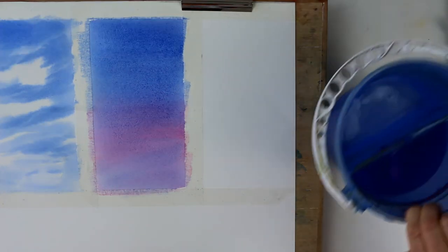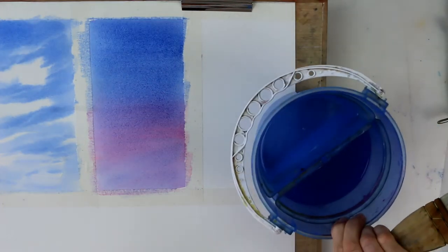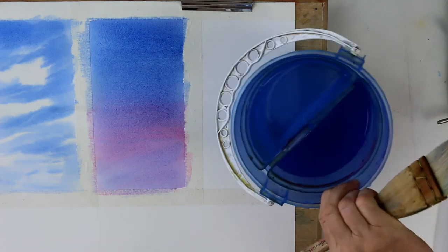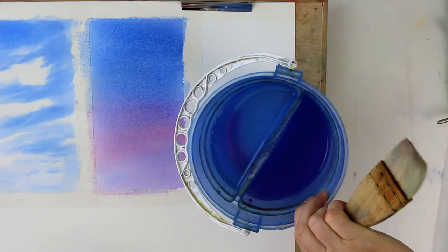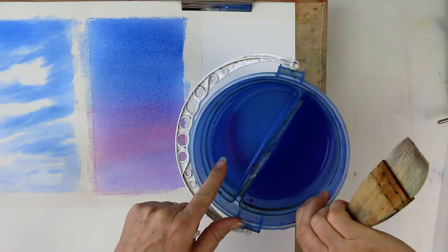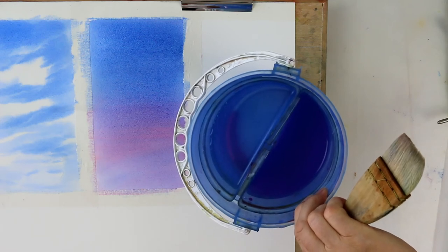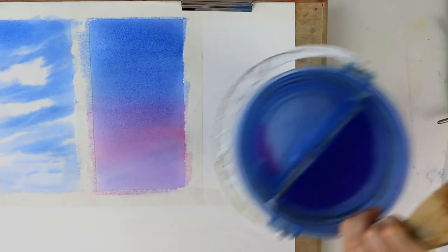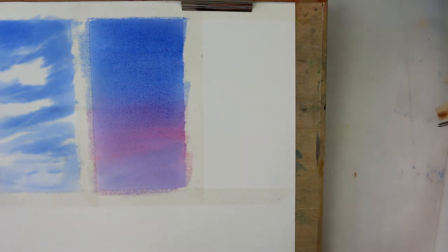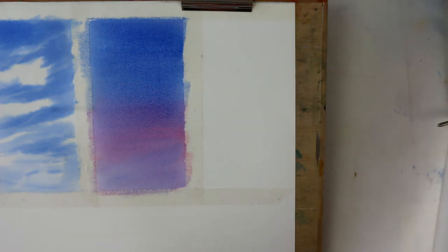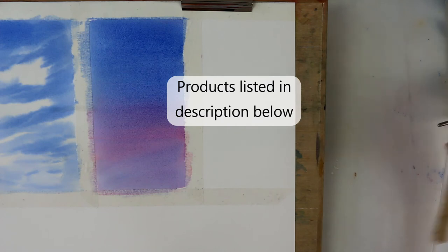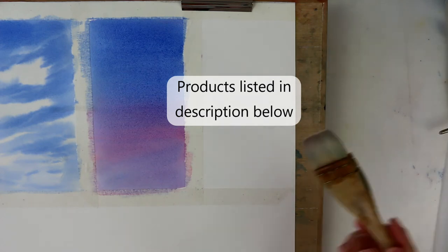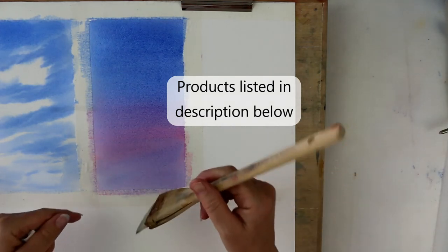This is the container that I use for my water. It's got two compartments. One for washing my brush and one for nice clean water for mixing my paints. Really useful. By the way, all the materials I'm using in this video are listed in the description down below the video.